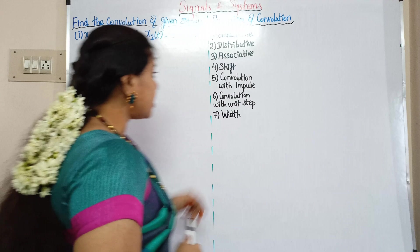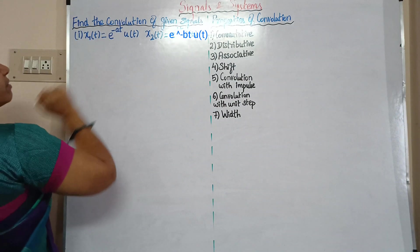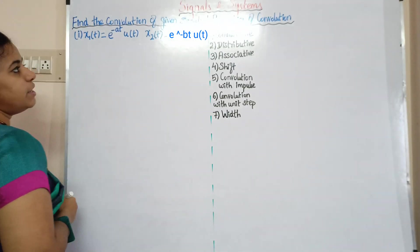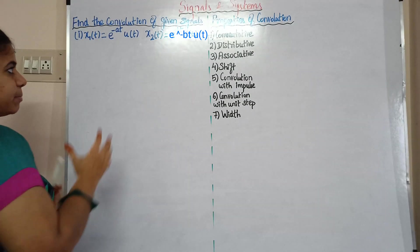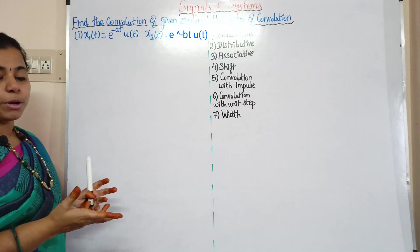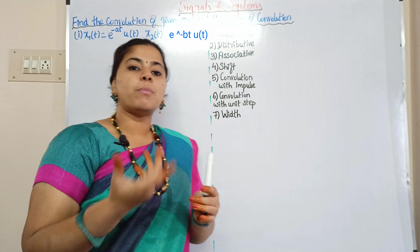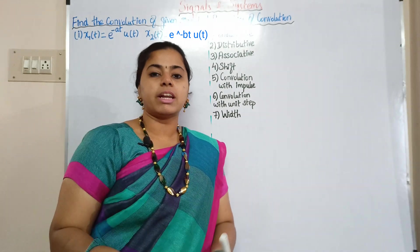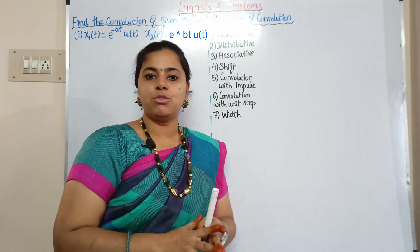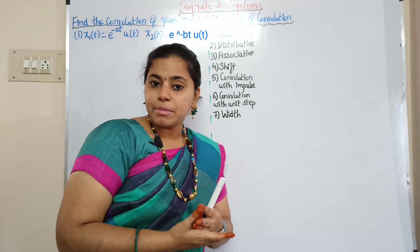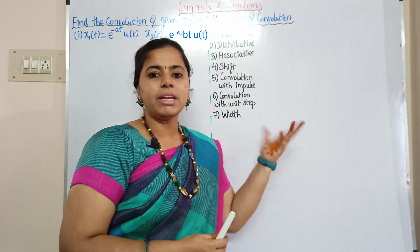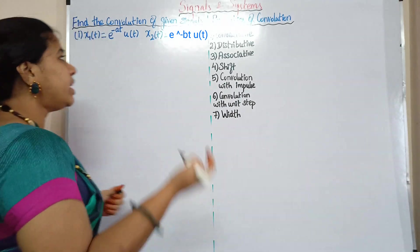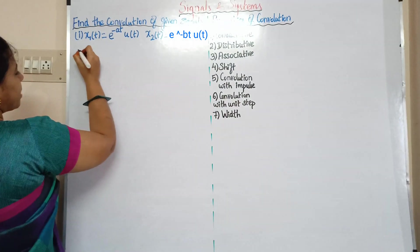So first, x1 of t equals e to the power minus a·t into u of t, and x2 of t equals e to the power minus b·t into u of t. This is the second signal. Now we will use this formula to convolute. For a common convolution, you can use either the formula or the graphical method.